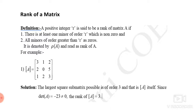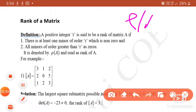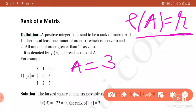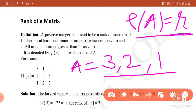All minors of order greater than R are zero. If rank of A equals R, then any minor of order greater than R must be 0. In short, if matrix A has 3 rows, maximum rank must be 3, 2, or 1. It depends on the determinant value. If the determinant of the complete matrix is 0, rank must be less than 3. Remember this definition — it is very important and frequently asked in examinations.